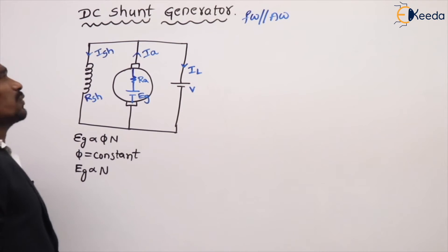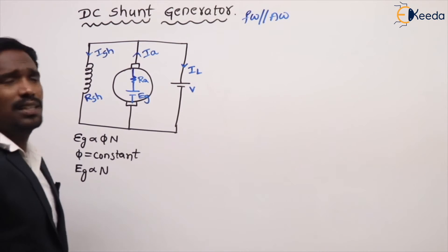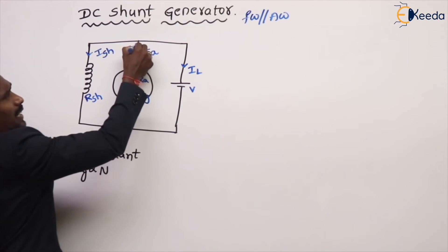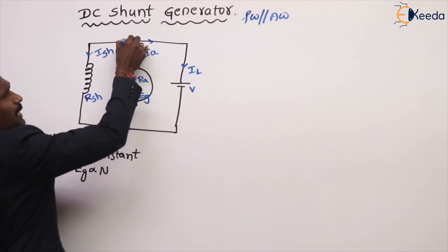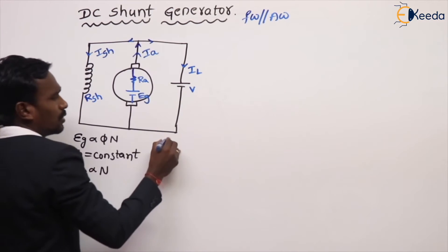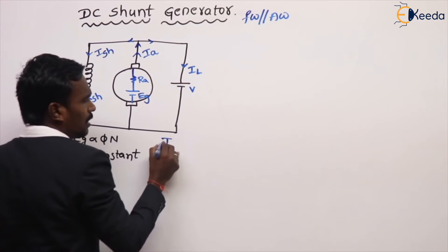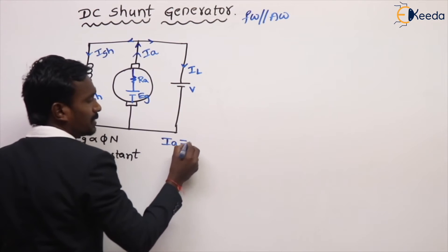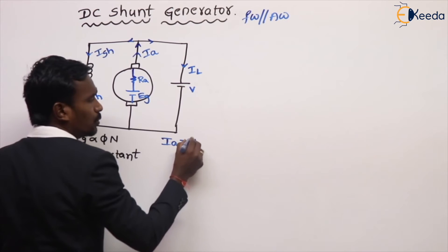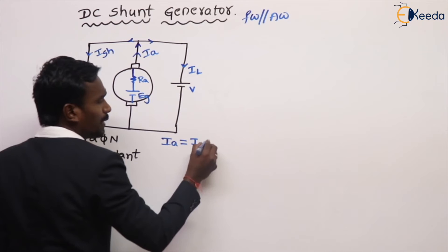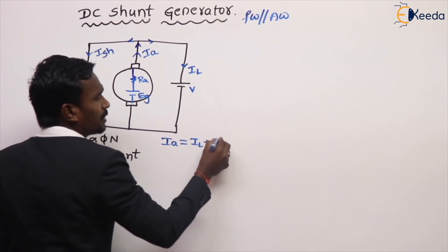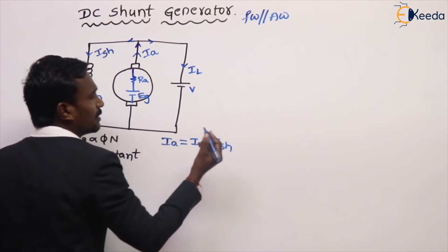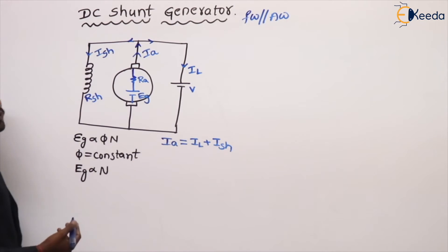What is the current equation? Here the armature current splits into two currents. So the armature current equals the line current plus the shunt field current: IA = IL + ISH. This is the current equation.